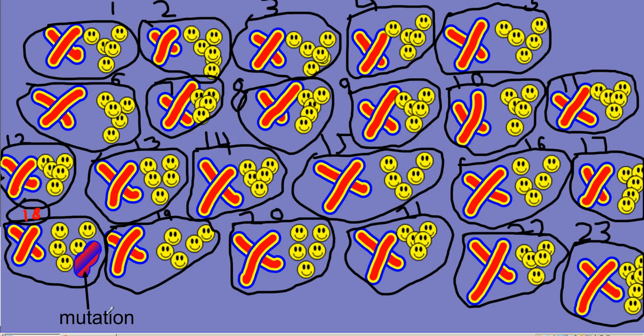Here is a picture I did of a cell. It takes 23 pairs of chromosomes to make one cell. Each pair has two chromosomes, one from the mother and one from the father.